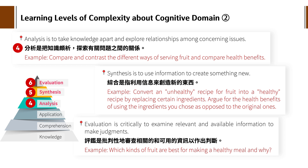做比较这样，这个就是一个分析。第五点综合（Synthesis），是指利用信息来创造新的东西，synthesis is to use information to create something new。比如说：convert an unhealthy recipe from fruit into a healthy recipe by replacing certain ingredients，就是你把一个不健康的菜单改良，加添东西让它变成营养的菜单。